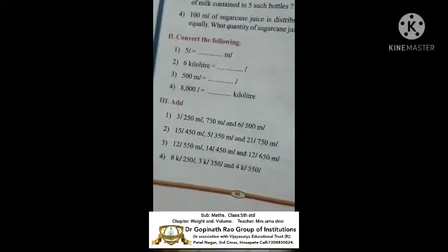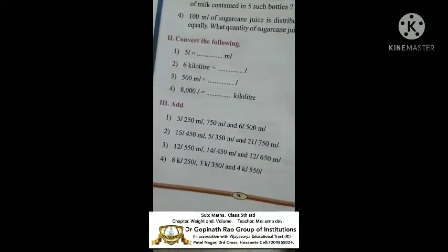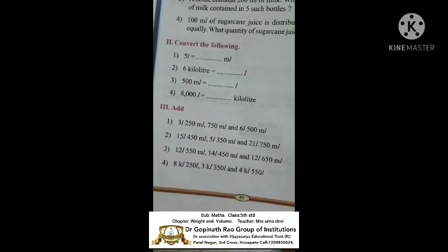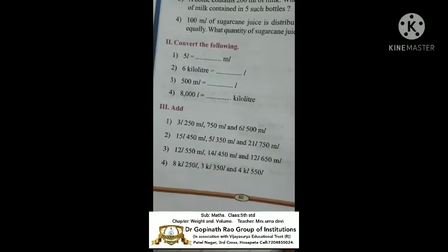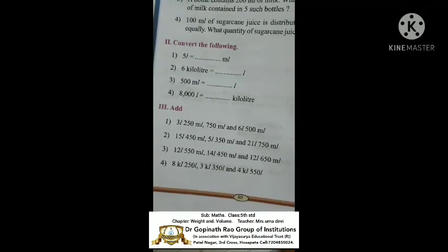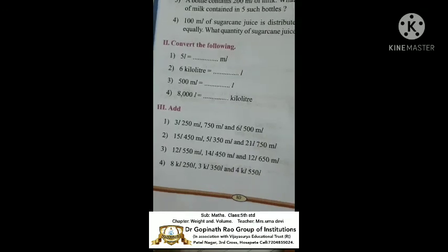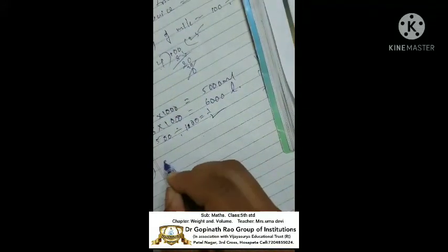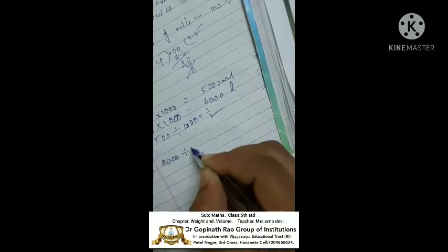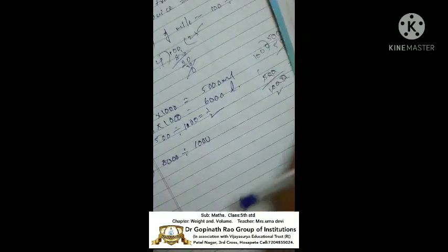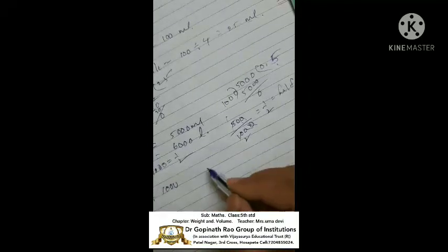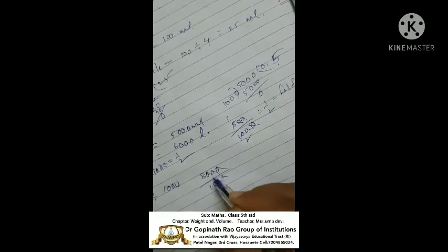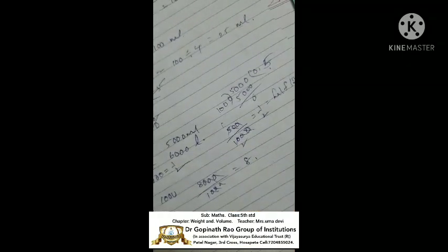Fourth conversion: 8000 litres equals how many kilolitres? Litres is small, kilolitres is big, so we use division. One kilolitre equals 1000 litres. Therefore 8000 divided by 1000: cancel the zeros and the answer is 8 kilolitres.